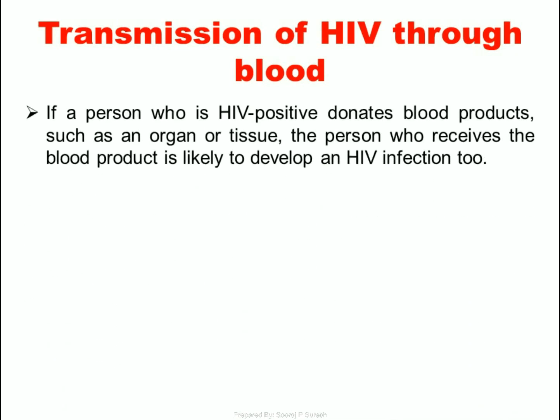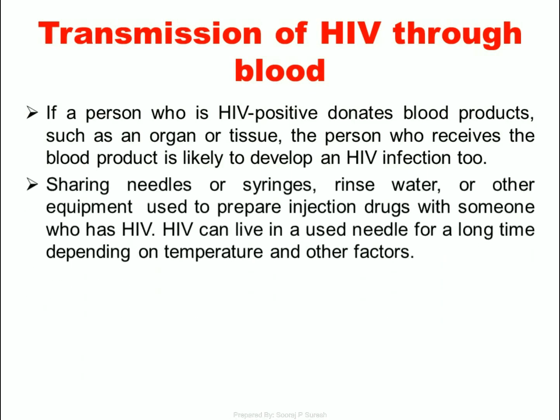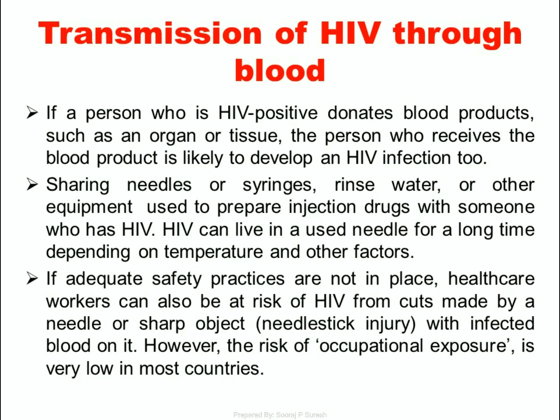Transmission of HIV through blood: If a person who is HIV-positive donates blood products, such as an organ or tissue, the person who receives the blood product is likely to develop an HIV infection. Sharing needles or syringes, rinse water, or other equipment used to prepare injection of drugs with someone who has HIV is also a route of transmission. HIV can live in a used needle for a long time depending on temperature and other factors. If adequate safety practices are not in place, healthcare workers can also be at risk of HIV from needle stick injury with infected blood. However, the risk of occupational exposure is very low in most countries.